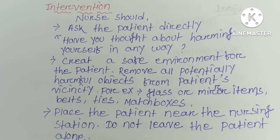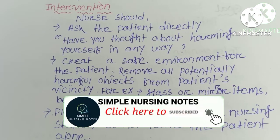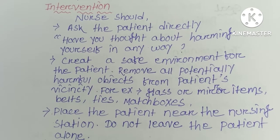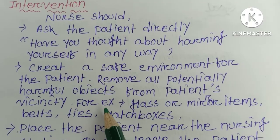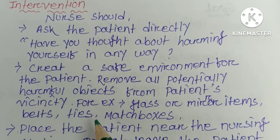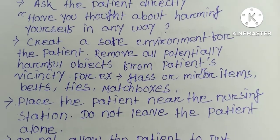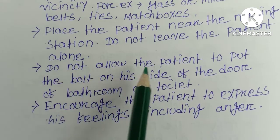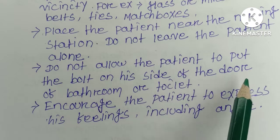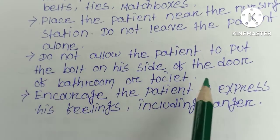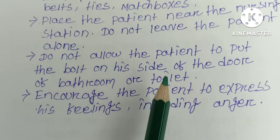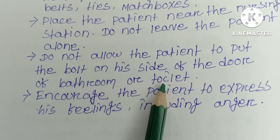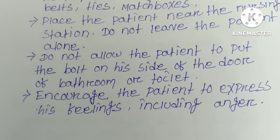The nurse should create a safe environment for the patient and remove all potentially harmful objects from the patient's vicinity — for example, glass, mirror items, belts, ties, and matchboxes. The nurse should place the patient near the nursing station and not leave the patient alone. The nurse should not allow the patient to bolt the door on his side, including bathroom or toilet doors.